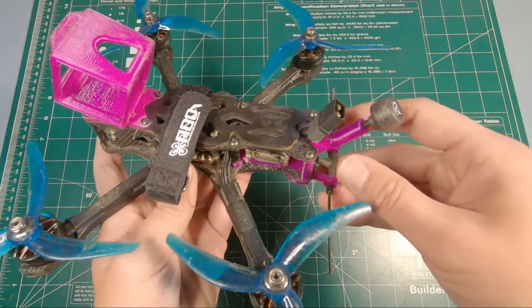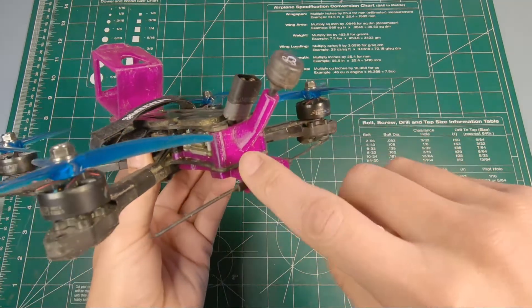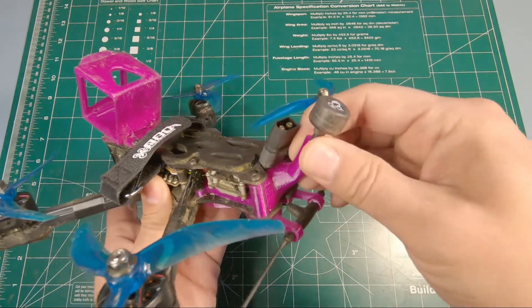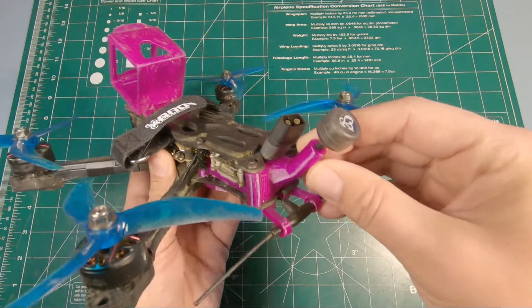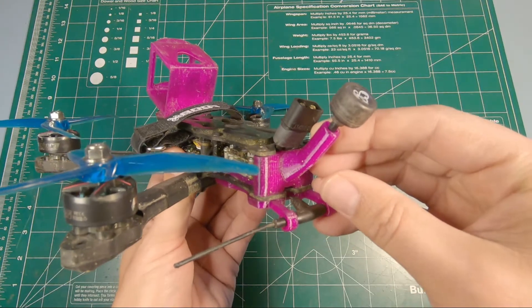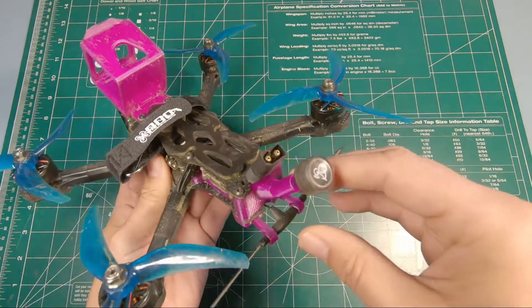Mine has a 20 by 20 mounting hole pattern on the bottom here, so you just screw it right in, super easy. It's made out of TPU, it's got an antenna holder that goes right up the back that is really beefy. A couple of the prototypes I've smashed really hard and no breakage at all, nothing. It's like nothing happened.